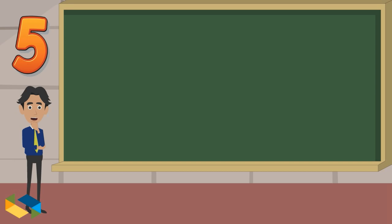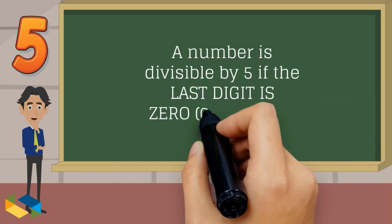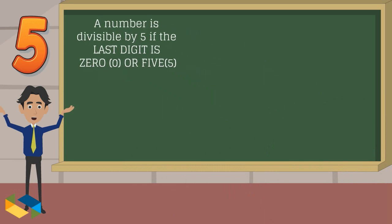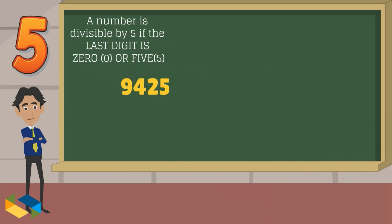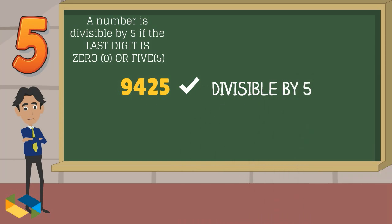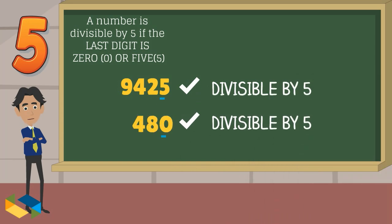For the number 5, the rule merely states that the last digit of the number has to be a 0 or 5. Consequently, 9,425 is divisible by 5, just as the number 480 is — the last digit is either 0 or 5.